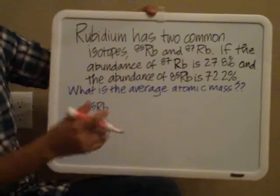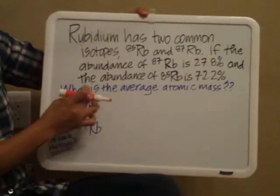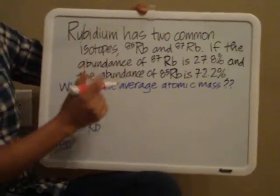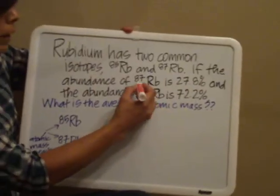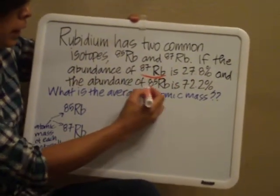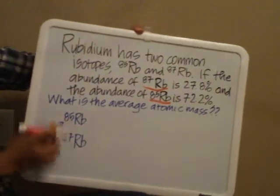Okay, so the first thing I want you to do is list all the isotopes that are mentioned in this question. So when I look at the question again, I see rubidium-87 and I see rubidium-85. So I'm going to list those here.